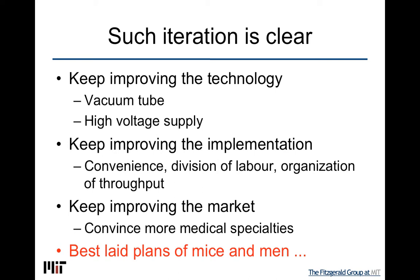These kinds of iterations are clear: you can keep improving the technology — the vacuum tube, the high voltage supply — keep improving the implementation, the convenience, the division of labor, the organization of throughput, and keep improving the market by convincing more medical specialties. In some ways it seems easy and simple: you just keep improving these numbers until you arrive at something. And this is the second theme I want to focus on — just how difficult this actually is.